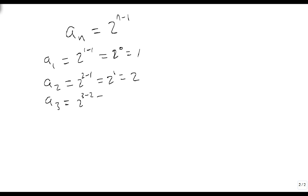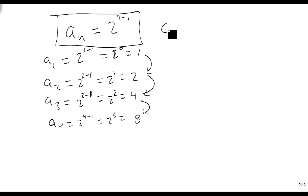a3 is 3 minus 2, which is 2 to the 2, which is 4. And notice, we're just doubling as we go. a4 is 2 to the 4 minus 1, which is 2 to the 3rd, which is 8. So this is geometric. In fact, any time we just have a number raised to a power, and the n is in the power, it's going to be geometric if that's all we have.